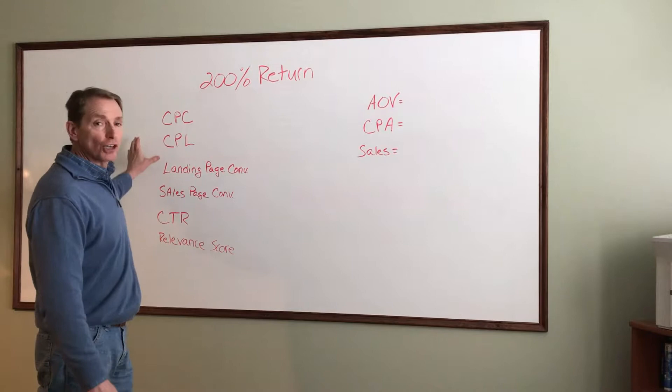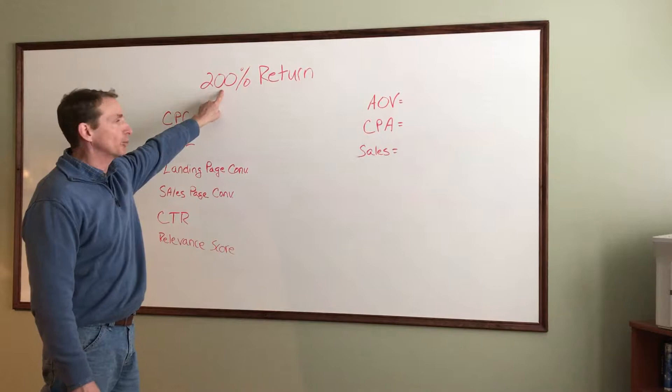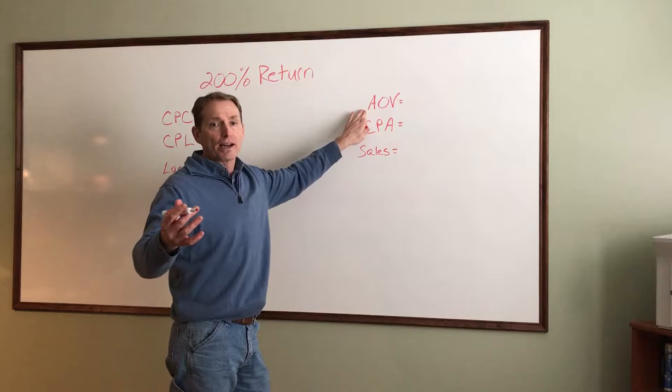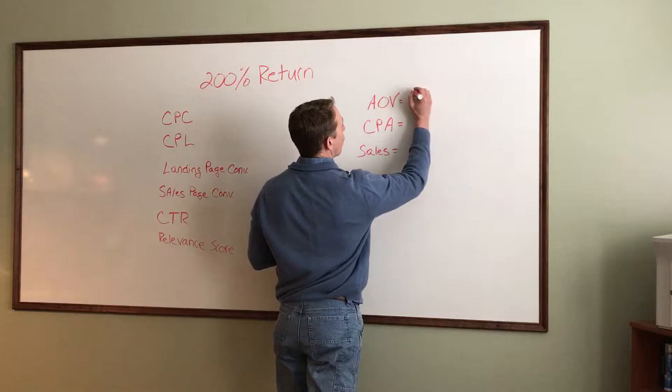The first thing we need to know is your average order value. Your average order value is your products and services — what are you going to be selling and how much are you going to be selling them for? I'm going to put down a simple number: I want my average order value to be $500.